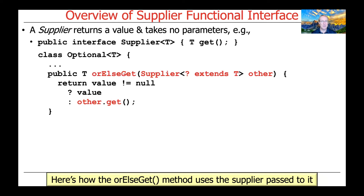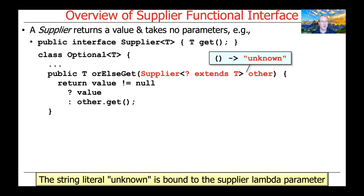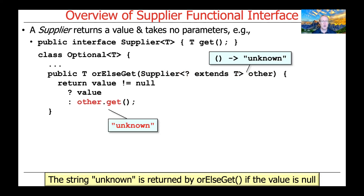Let's take a look at how the orElseGet method is implemented in the Java Optional class, which gives us a chance to discuss the Supplier parameter passed to orElseGet as an argument. A Supplier is going to extend some type, and in this case we pass in a lambda Supplier that will return the string "unknown" when invoked. If the value is not null, we return the value. Otherwise, if the internal value that the Optional holds is null — meaning the being map didn't know anything about the type passed in — we call other.get, which invokes the Supplier lambda to get the result, which in this case would be the string "unknown".